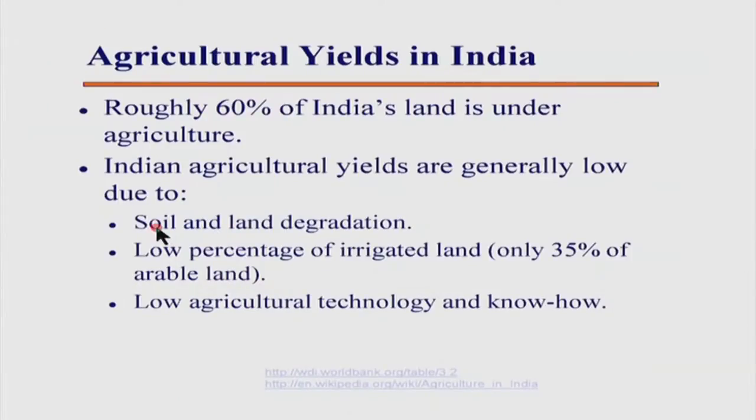India's productivities are often several times less than the world's highest, and the primary reasons are probably soil and land degradation. The low fraction of arable land that is irrigated is also important. In many places, agricultural technology and know-how is limited, and yields could be boosted by improving that.